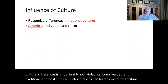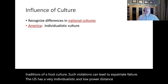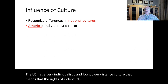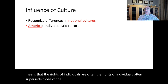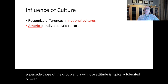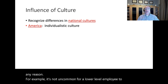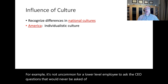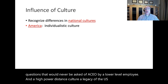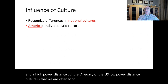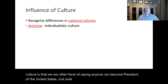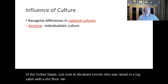The U.S. has a very individualistic and low power distance culture. That means the rights of individuals often supersede those of the group, and a win-lose attitude is typically tolerated or even expected. As a low power distance culture, it is expected that anyone can question anyone in a position of authority anytime for any reason. For example, it's not uncommon for a lower-level employee to ask the CEO questions that would never be asked in a high power distance culture. A legacy of this is the idea that anyone can become president — just look at Abraham Lincoln, raised in a log cabin with a dirt floor.